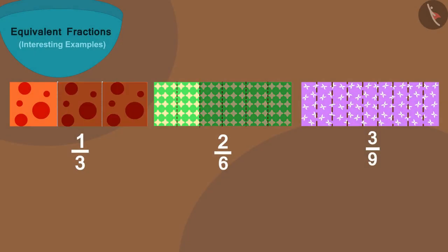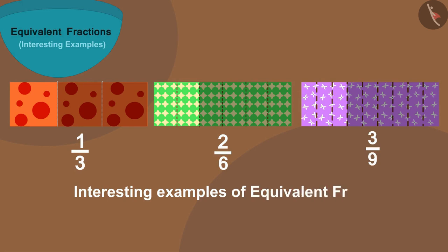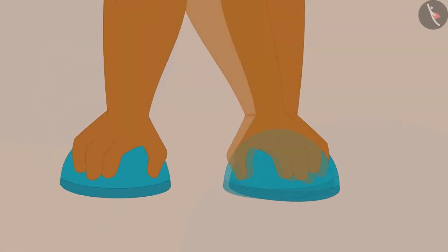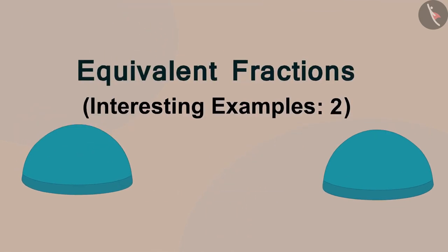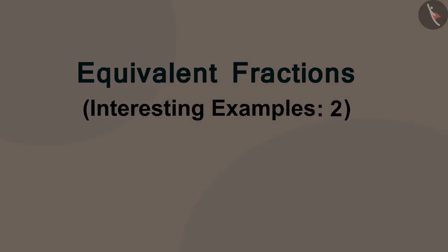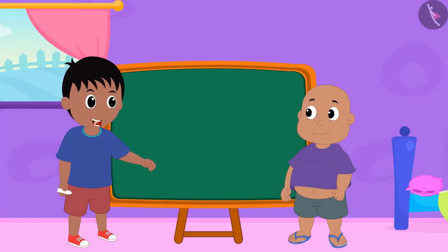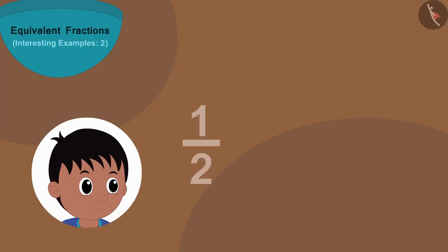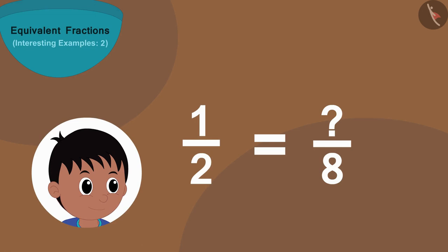Hello children! In the last video we saw some interesting examples of equivalent fractions. In this video we will learn more about it through some more interesting examples. Today Raju and Bablu are playing a unique game — Raju will write a fraction, then he will write the number below the equivalent of that fraction, and Bablu will have to find the number above it.